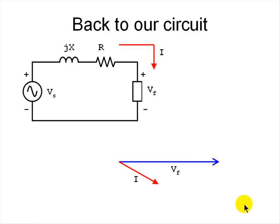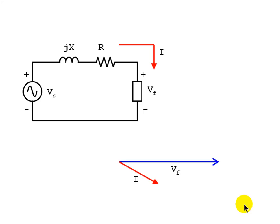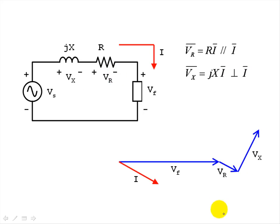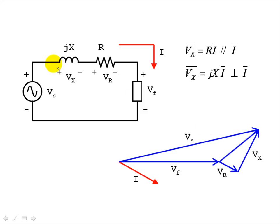We return to the original inductive load. This current produces a voltage drop Vr in the resistive part of the cable — Vr is in phase with I, its phasor parallel to the current phasor, and in series with Vf. The current also produces a drop Vx in the reactive part of the cable. Vx is ahead of I by 90 degrees and in series with Vr. Adding Vr and Vx gives the voltage drop across the cable, and adding Vf, Vr, and Vx gives Vs, the voltage of the source.